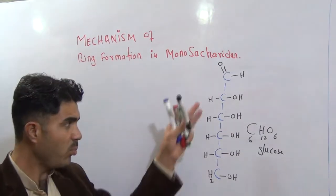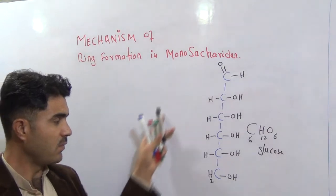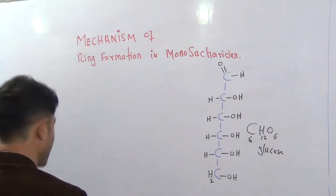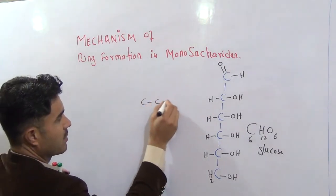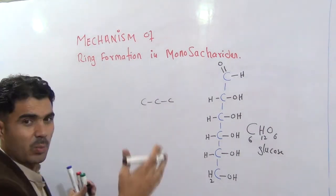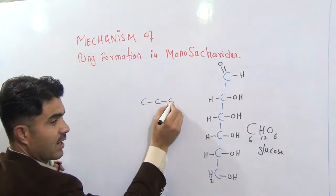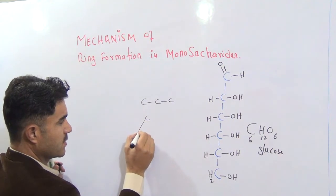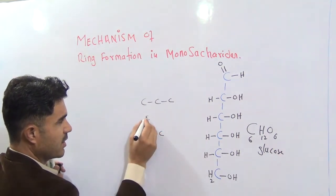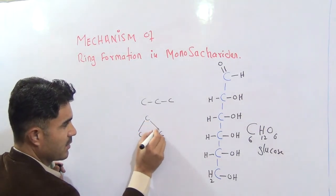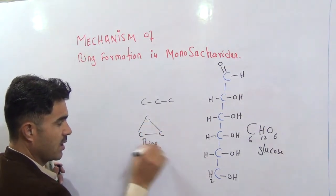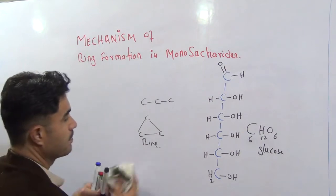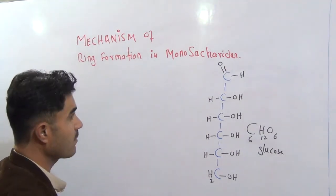Now I am going to tell you how this open structure is converted into a ring form. Open structure means that you have carbon, carbon, carbon, carbon, carbon — a chain like this. If the first carbon is attached to the last carbon, this is now called a ring form. Today we will discuss how monosaccharides make a ring form.